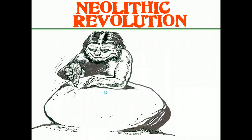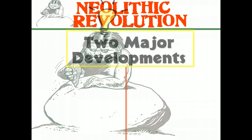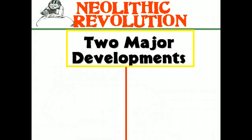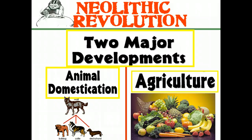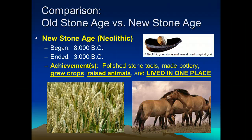But it all changed dramatically with one idea, and this idea took the form of two things. First, man began to domesticate animals — make animals work for man. Second, man began to domesticate plants. That is agriculture: making plants grow when we wanted them to grow, as many as we wanted. This changed everything, and from that point forward, man began to live in one place.